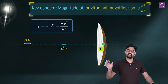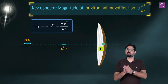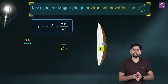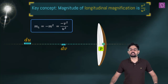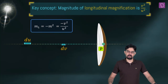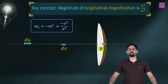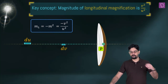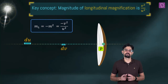We were getting this formula by simply differentiating the mirror formula and using the chain rule. So the magnitude of the longitudinal magnification is just V squared by U squared.